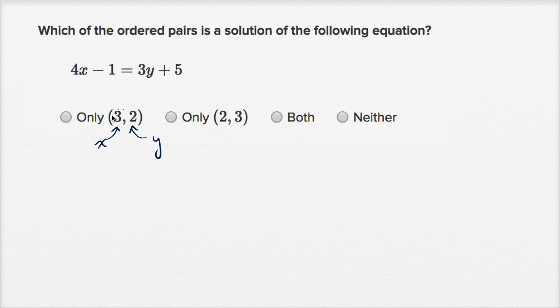So if this is a solution, if this ordered pair is a solution, that means that if x is equal to 3 and y is equal to 2, that would satisfy this equation up here. So let's try that out.